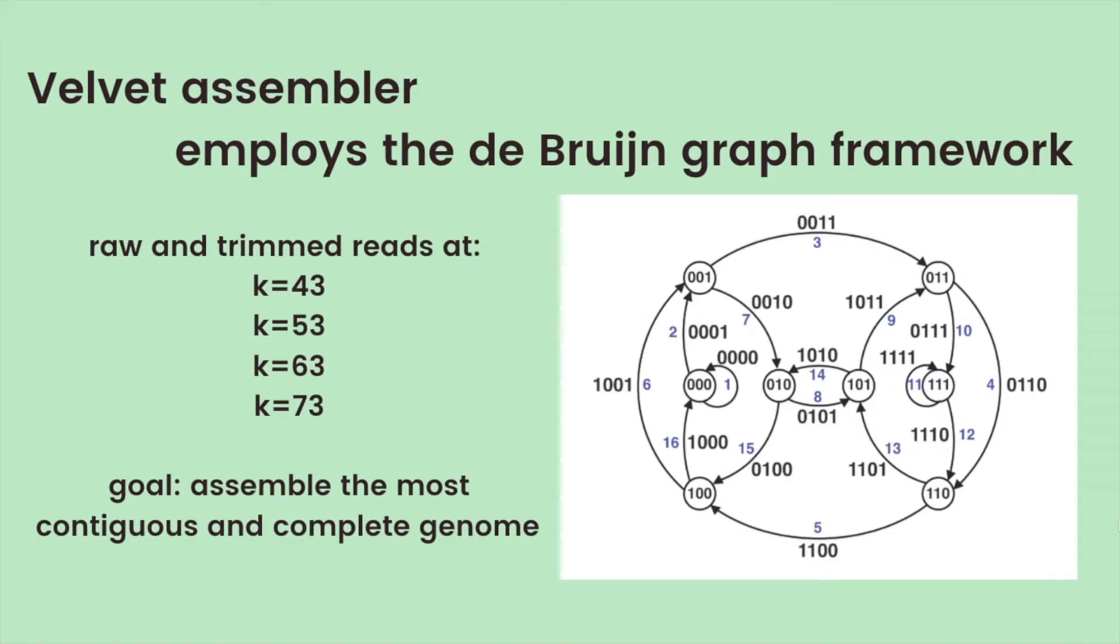I then used the Velvet Assembler, a de novo assembly that employs the De Bruijn graph framework to construct a genome assembly for both raw and trimmed reads at k-mer values of k equals 43, 53, 63, and 73. The reason why we tested for different k-mers was to find the optimum k-mer value that finds the optimal path in assembling the most contiguous and complete genome.